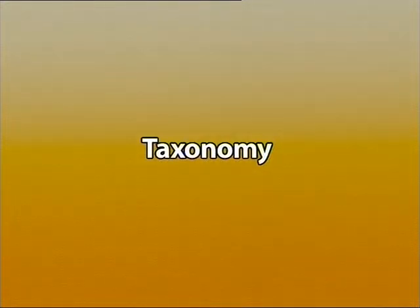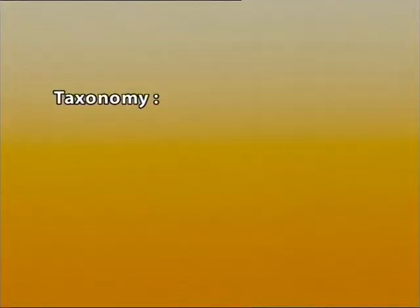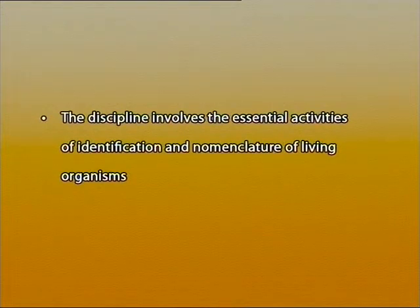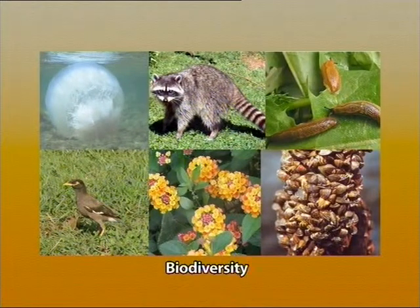Let us start with the first component — what is taxonomic literature. In earlier lectures you might have heard about the word taxonomic. It is a scientific discipline, a basic discipline of biological sciences that deals with the discovery, description and classification of living organisms. The discipline involves the essential activities of scientific identification and nomenclature of living organisms. This identification and nomenclature is crucial for the scientific communication of biodiversity throughout the world.